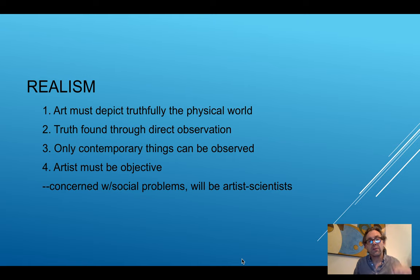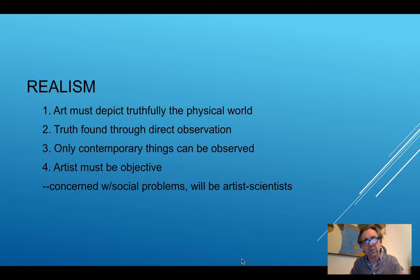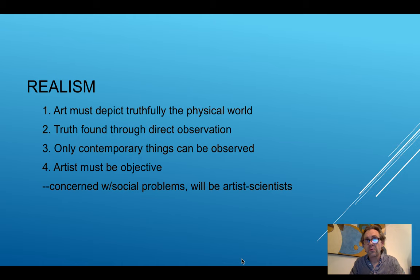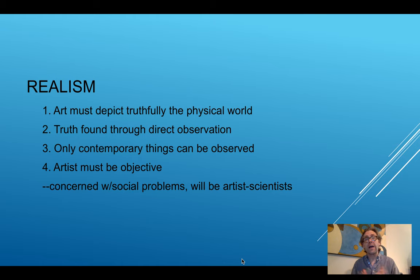Here are four things to keep in mind. Number one: art itself must depict truthfully the physical world in which we exist. If it doesn't represent the world truthfully, then that's not real and it's not realism. Number two: truth is found through direct observation. Hearsay is not allowed. If I cannot directly observe something, if I am not a witness to it, then how can there be truth in it?